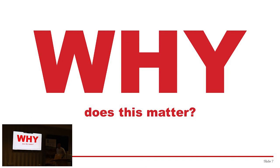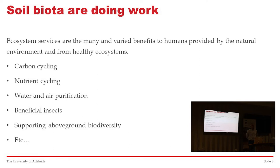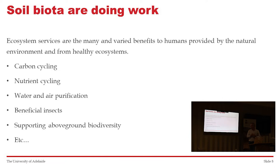Why does this matter? The soil biota are doing work for us — cycling nutrients, storing carbon, cycling it as we've seen today. We often talk about ecosystem services: the many and varied benefits to humans provided by the natural environment from healthy ecosystems. These include carbon and nutrient cycling, purifying the air and water we drink and breathe, supporting beneficial insects, predators of pests, and above-ground biodiversity. When you have more below-ground biodiversity, you have more above-ground biodiversity. Soils and the life in them really underpin a lot of ecosystem services we rely on.